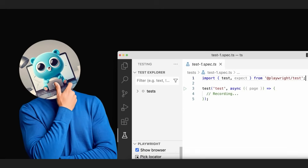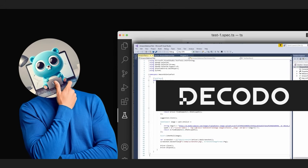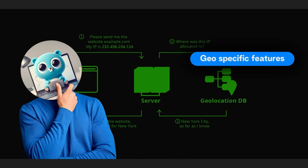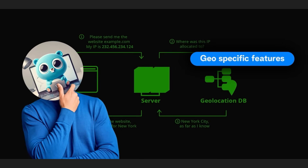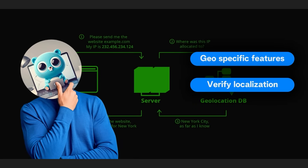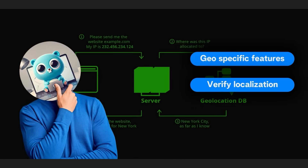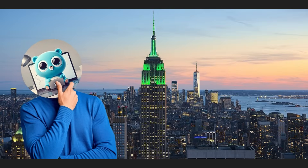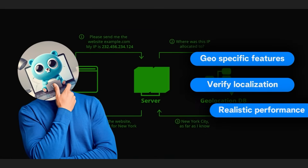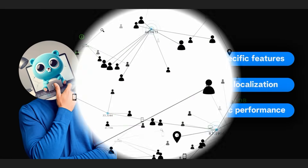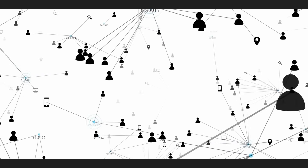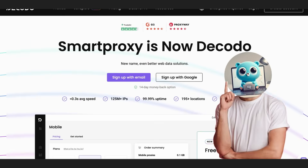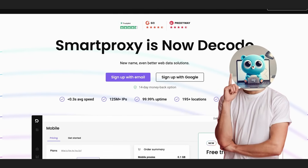By routing your Playwright or Selenium tests through Decodo's network, you can ensure reliable testing of geo-specific features, verify localization by seeing your app from anywhere in the world — say Japan, London, or New York — and even perform realistic load testing that simulates traffic from thousands of unique users, not just a single server.